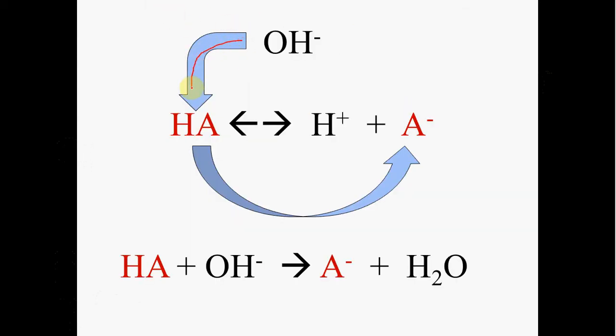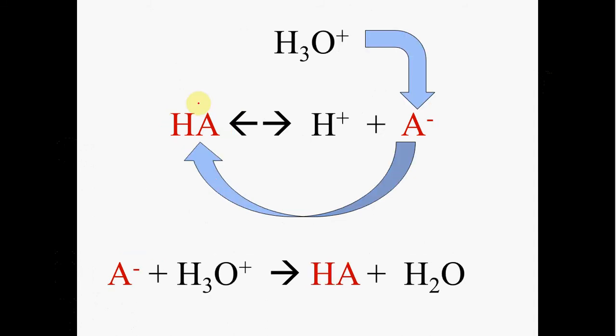Again, all you're doing in this process is changing the HA A negative amounts. Turning some HA into A negative by adding hydroxide, or turning some A negative into HA by adding the hydronium ion.